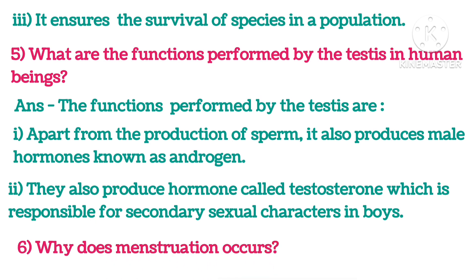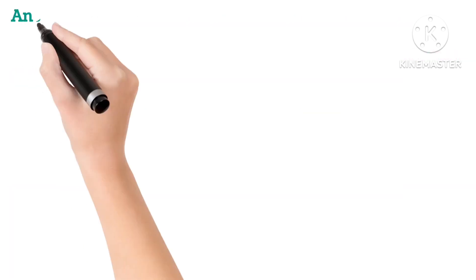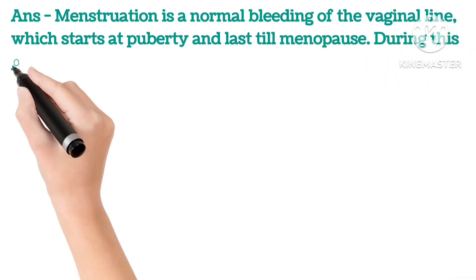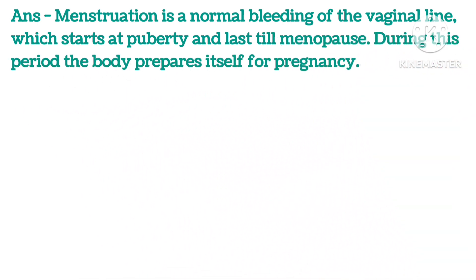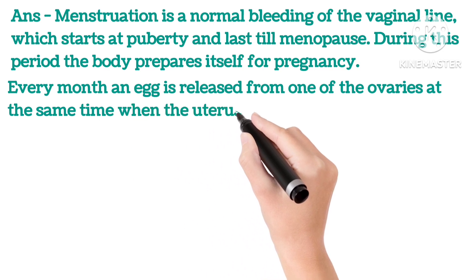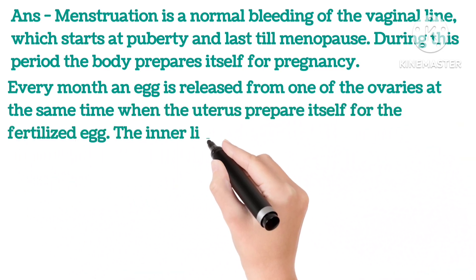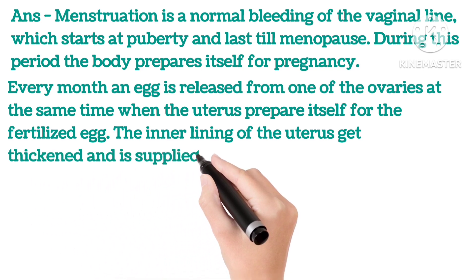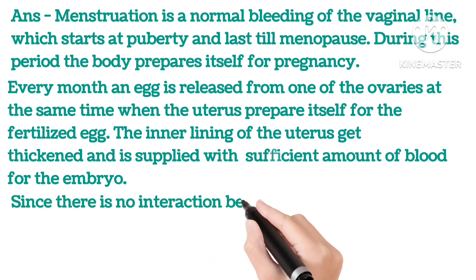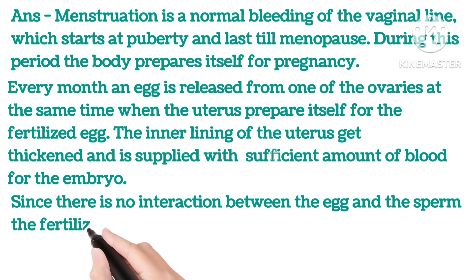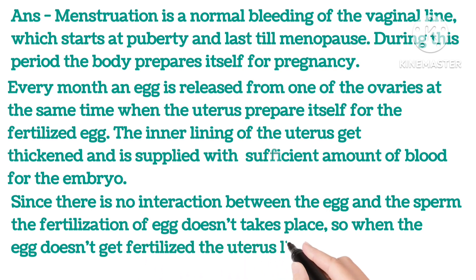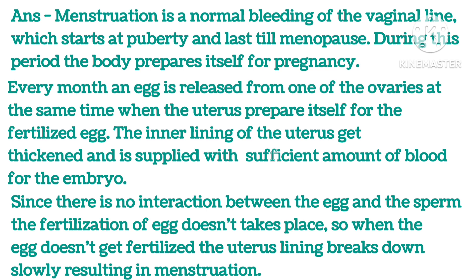Sixth: Why does menstruation occur? Menstruation is normal vaginal bleeding which starts at puberty and lasts till menopause. During this period, the body prepares itself for pregnancy. Every month, an egg is released from one of the ovaries while the uterus prepares itself for a fertilized egg — the inner lining gets thickened and is supplied with blood for the embryo. Since there is no interaction between egg and sperm, fertilization does not take place, and when the egg is not fertilized, the uterus lining breaks down slowly, resulting in menstruation.